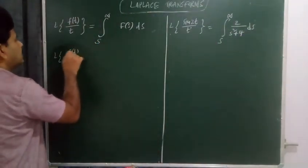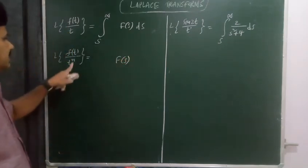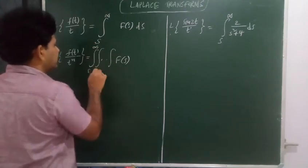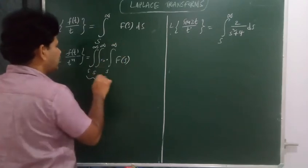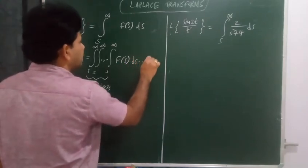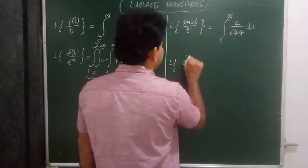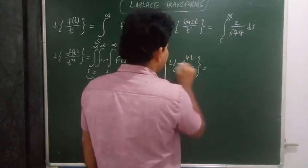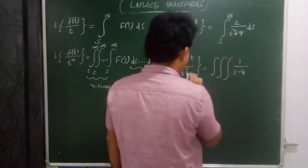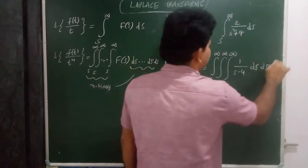If the function is divisible by t to the power n, then since t appears n times, you have an n-folded integral from s to infinity repeated n times ds. For example, L{e^(4t)/t³}: L{e^(4t)} is 1 over (s−4), and since it is divided by t cubed, it is a three-folded integral from s to infinity, integrated with respect to ds three times.